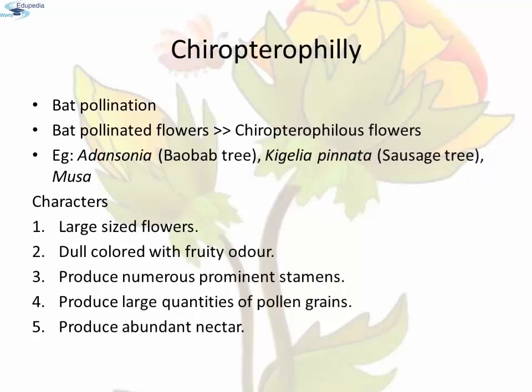Chiropterophily: Pollination by the agency of bats is called chiropterophily or bat pollination. The flowers are called chiropterophilous flowers. For example, Araucaria, Kigelia pinnata, and Musa. Bats are nocturnal animals and transport pollen grains over long distances up to 30 kilometers. Characteristics of chiropterophilous flowers: They are large in size, dull colored with fruity odor. They produce numerous prominent stamens and large quantities of pollen grains, and produce abundant nectar.